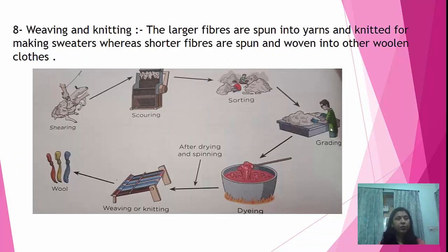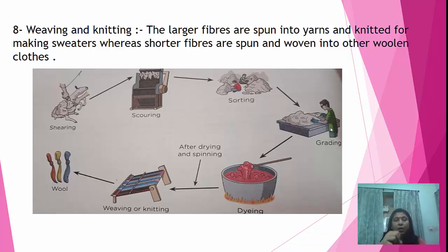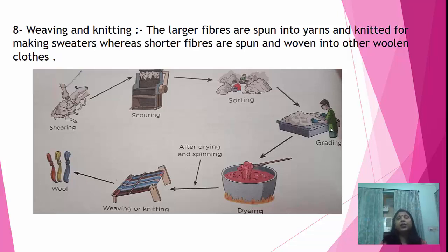The last step is weaving and knitting — how the fabric is made. The larger fibres are spun into yarns and knitted for making sweaters, whereas the shorter fibres are spun and woven into other woolen clothes. You can see from the diagram all the steps: shearing, scouring, sorting, grading, dyeing, drying, then weaving or knitting, and the fabric is formed.